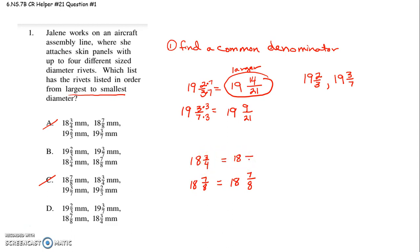So 7-eighths is still 7-eighths. So if I want to rewrite 3-fourths as some number of eighths, 4 times 2 is 8. 3 times 2 is 6. So 18 and three-fourths is 18 and 6-eighths. 7-eighths is bigger than 6-eighths. So this is the larger. So then we know 18 and seven-eighths is bigger than 18 and three-fourths. And we do that by finding the common denominator.